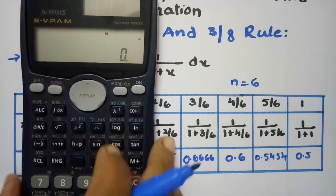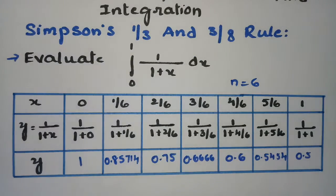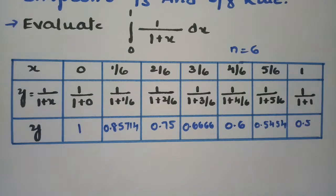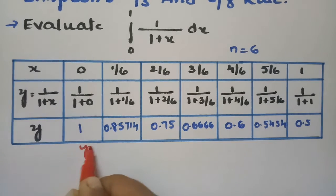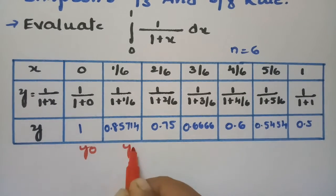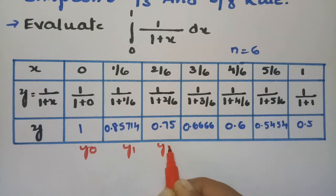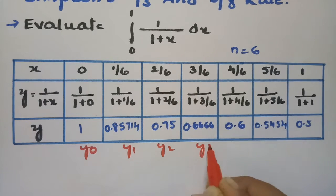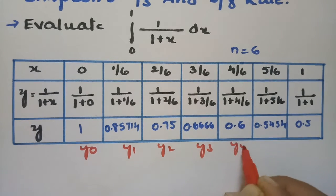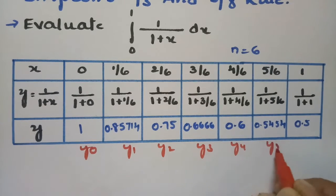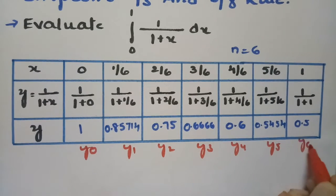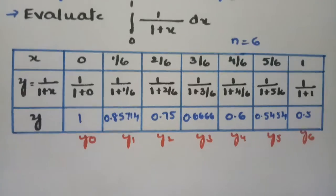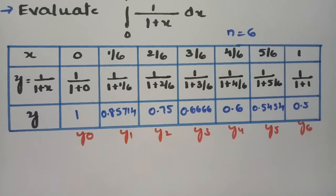At x = 1 (i.e., 6/6), the value is 0.5. After getting all these values, we name them: y0 = 1, y1 = 0.85714, y2 = 0.75, y3 = 0.6666, y4 = 0.6, y5 = 0.5454, and y6 = 0.5.